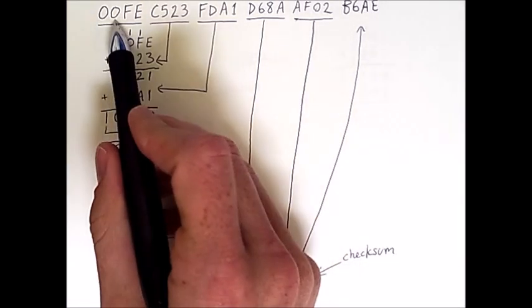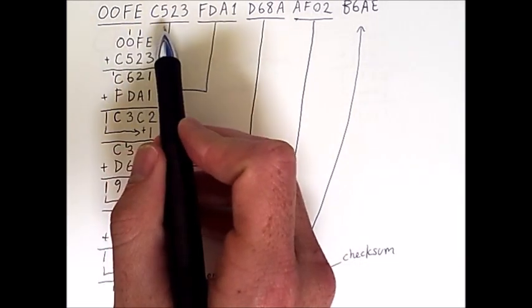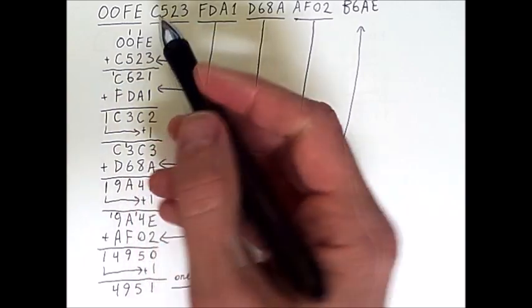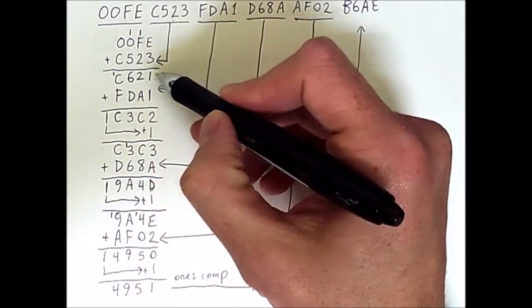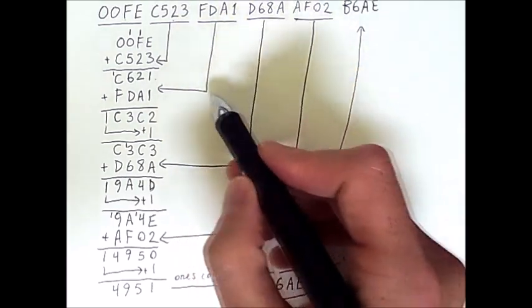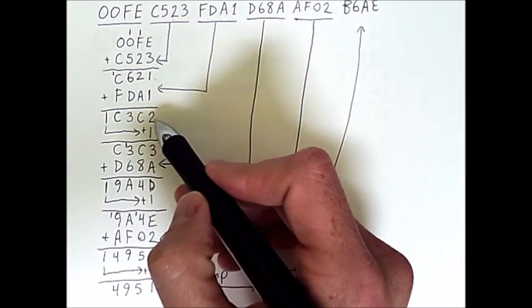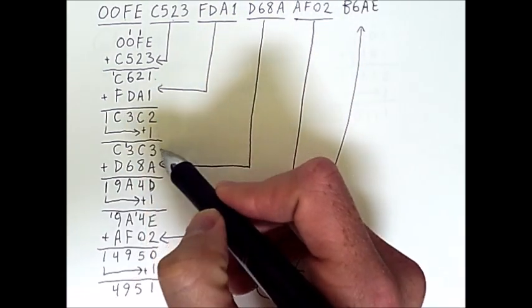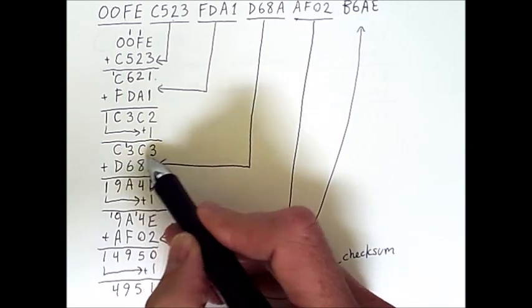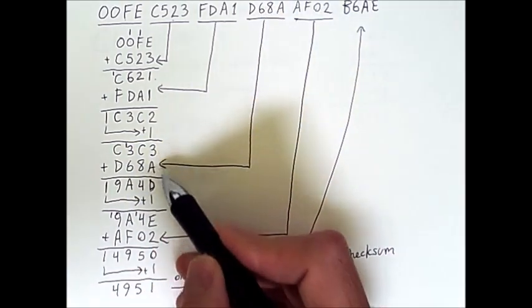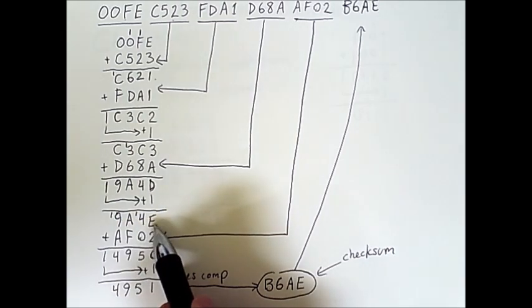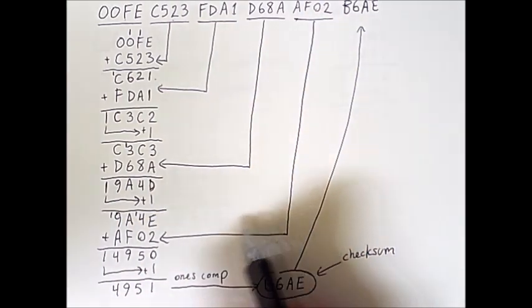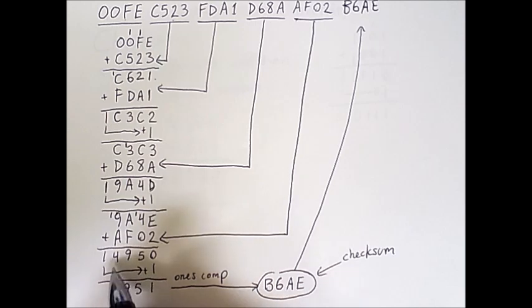So it'll start from the beginning and add these two words together as before. And if the data that is received is the same as what was sent, then we'll get the same sequence of results. Each of these partial sums will be the same. So we'll repeat each of these steps, including the ones complement addition aspects. And we'll just go through the same process and get all the way to the result of 4951 at the end here.